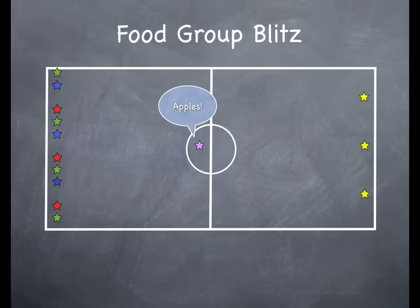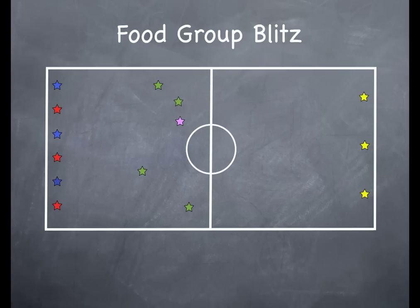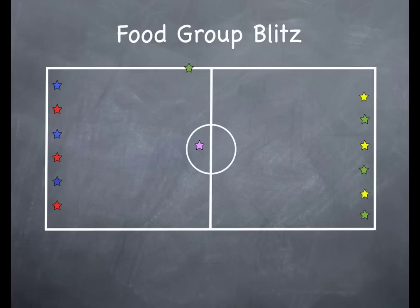The chef calls a new food — apples. So all the fruits and vegetables group will run across. Looks like someone got tagged there, so they have to go onto the table on the side. While players are on the side, you can have them doing an activity involving the food groups — like using a list, writing on the whiteboard different foods, or whatever you decide.